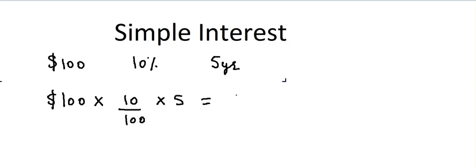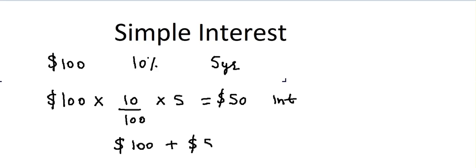That gives a total of $50 in interest. So after five years, I'll have my principal of $100 plus $50 added to it, giving a total of $150. Now let's look at what's happening on a year-by-year basis.